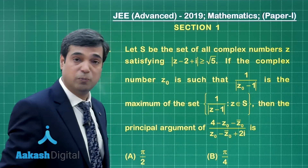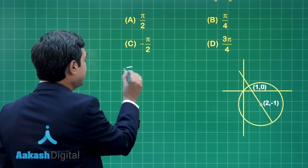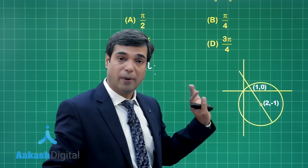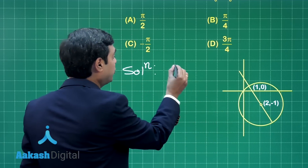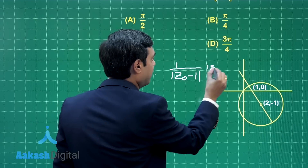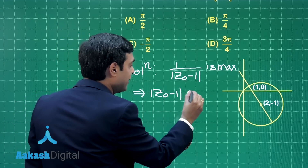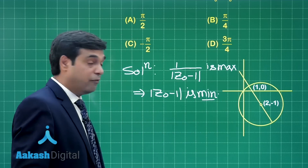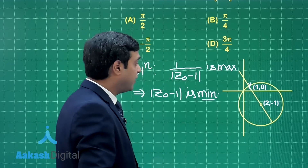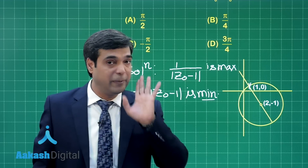This particular circle is going to play a crucial role, so let us draw the figure first. We draw a circle with center at (2, -1). The question asks for the maximum value of 1/|Z₀ - 1|, which is maximum when |Z₀ - 1| is minimum. We are looking for the minimum value, so Z₀ will lie on the circle where the line joining the point (1, 0) passes through the center of the circle.